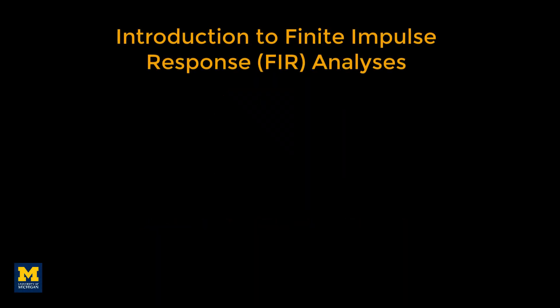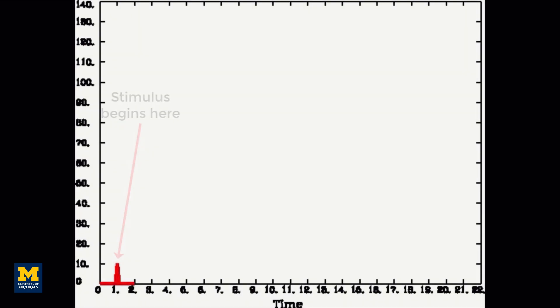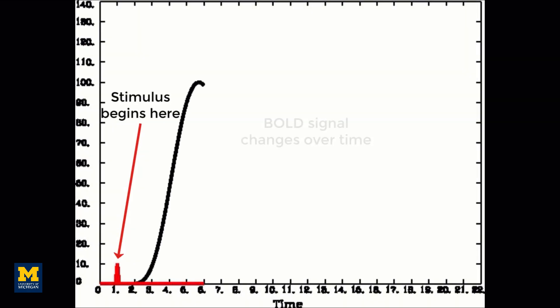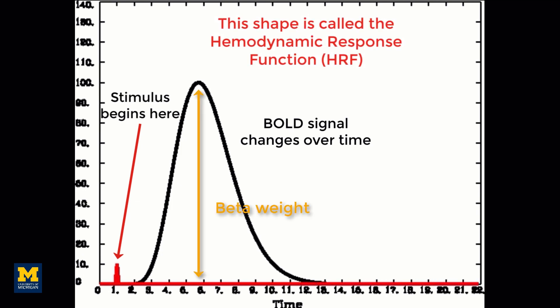If you have completed the tutorials on task-based fMRI studies, you are familiar with how basis functions are convolved with onset times to best fit the time series. One drawback of this method is that a single best fitting parameter is estimated for each condition. What if instead we wanted to examine the average time course of the activity after the onset of the condition?